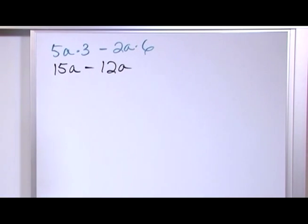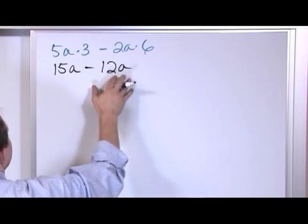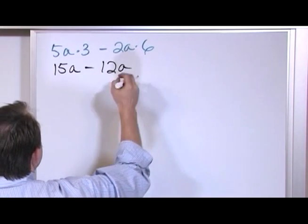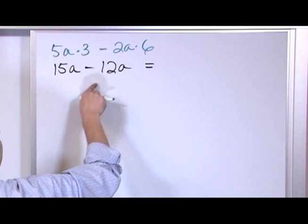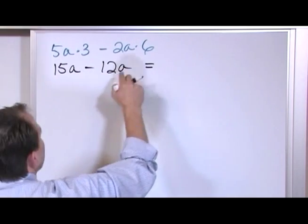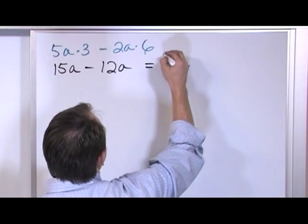Now we have two like terms. We have a here and a here, so we add these coefficients together. 15 minus 12 is 3a, like that.